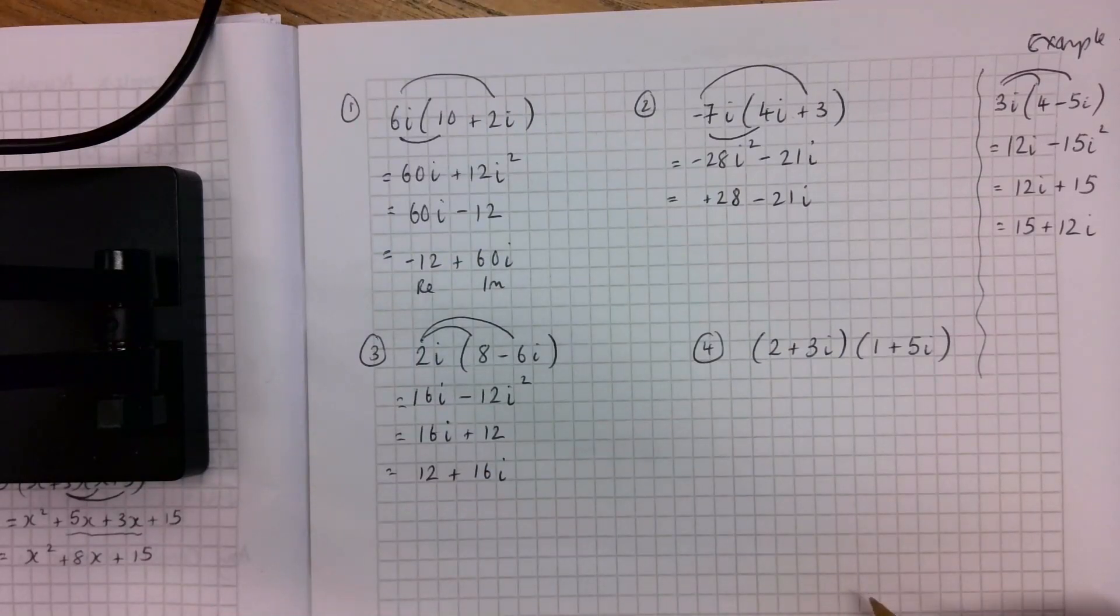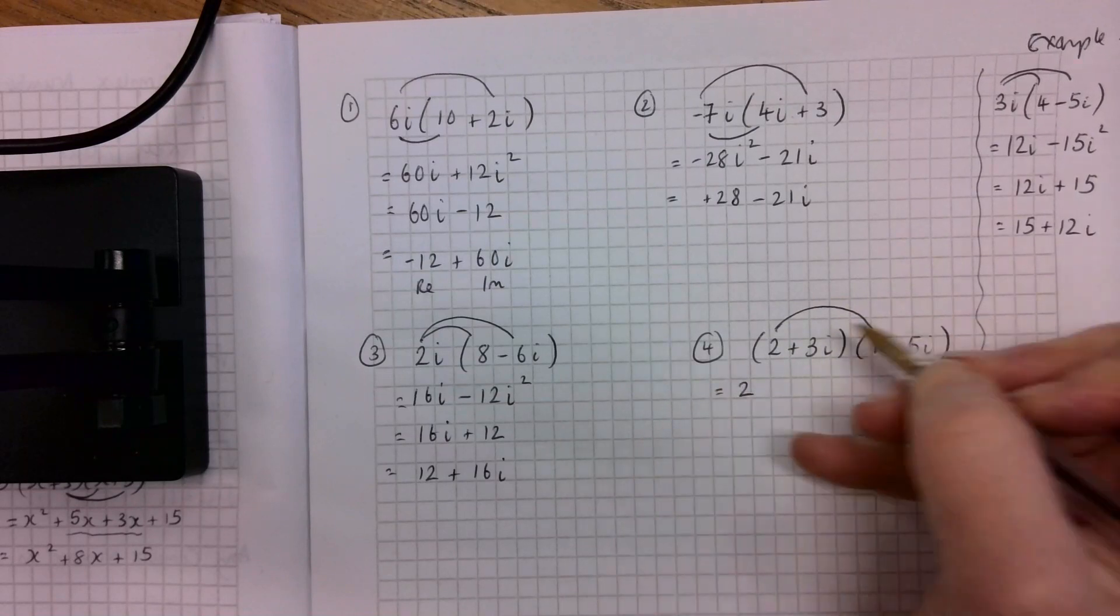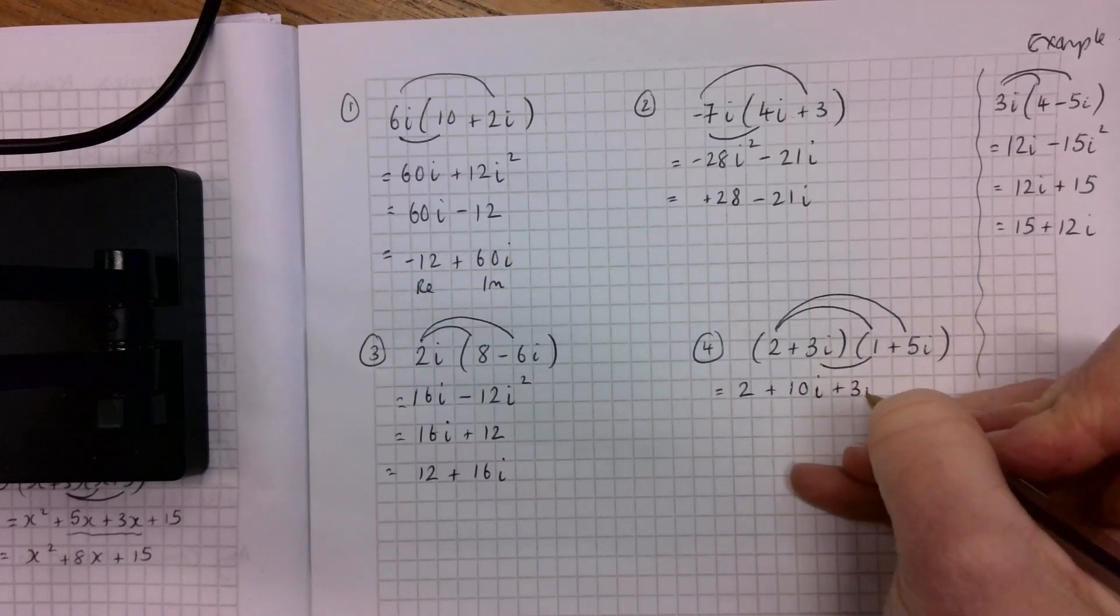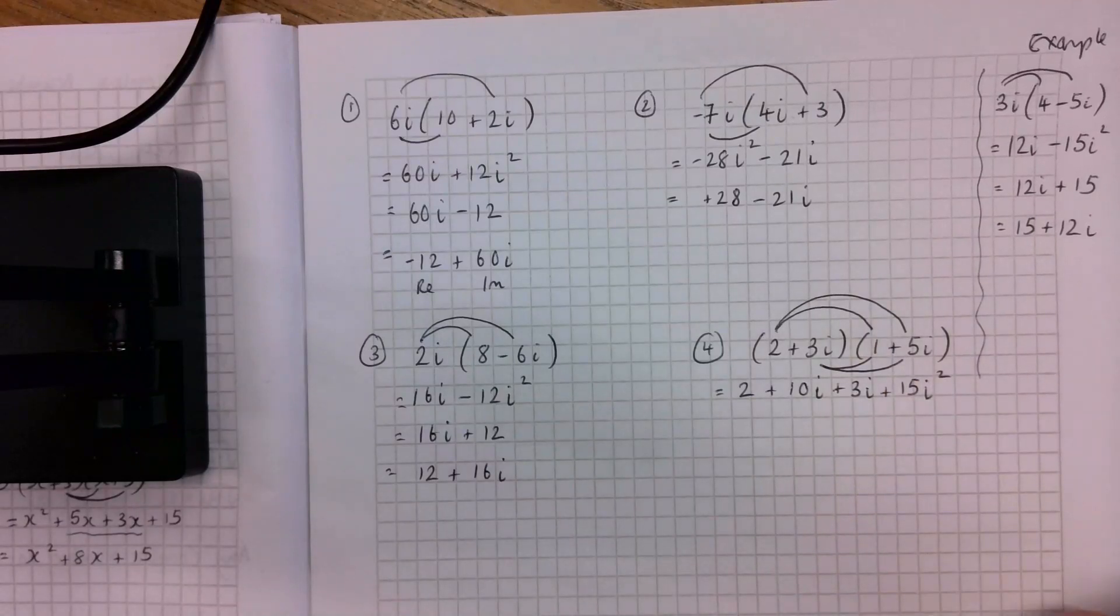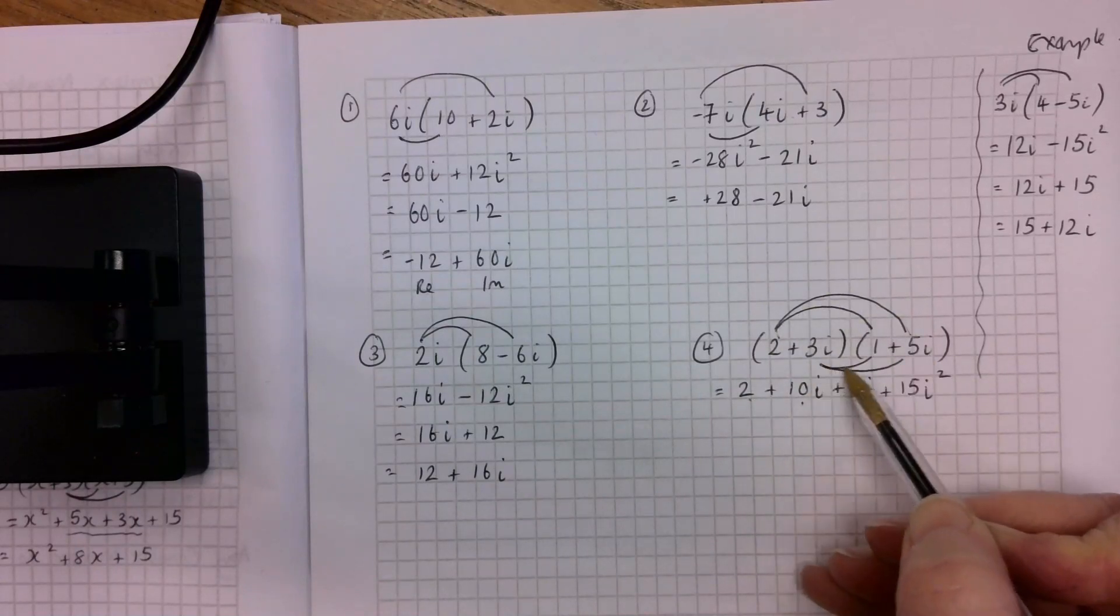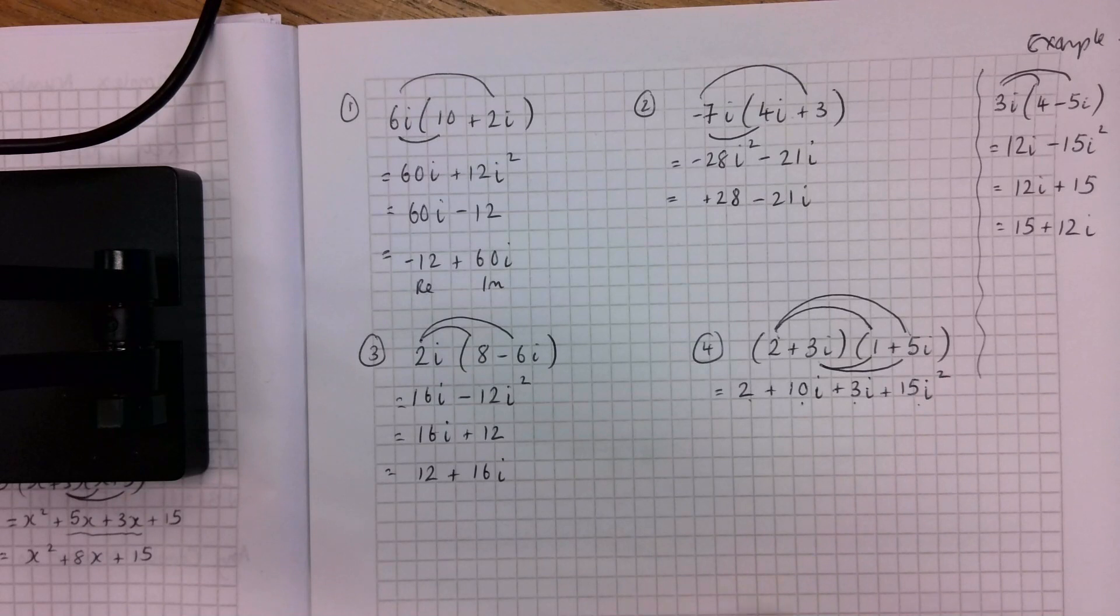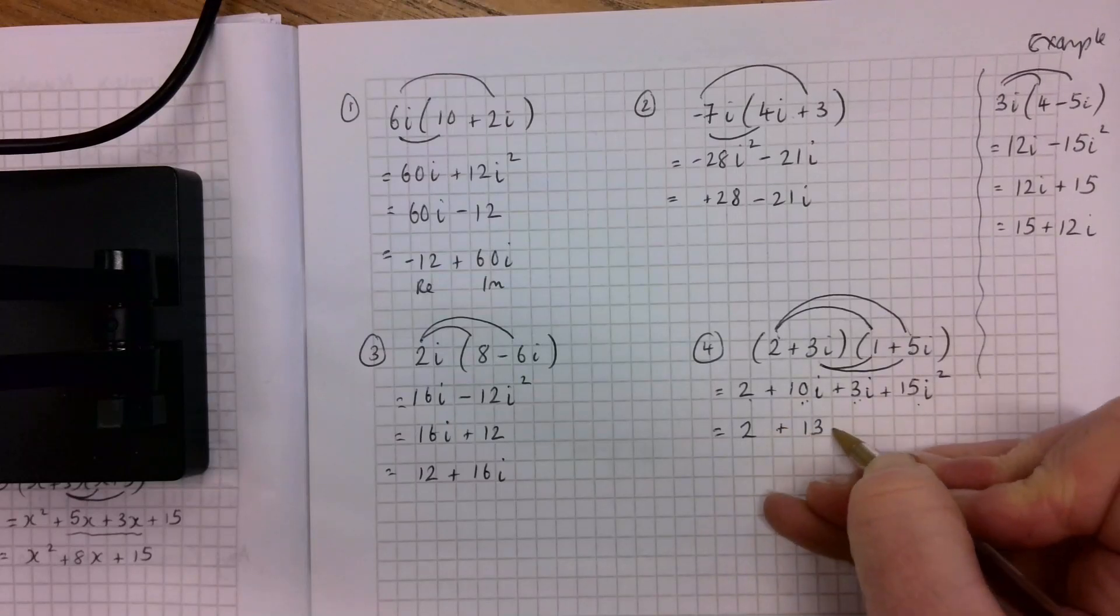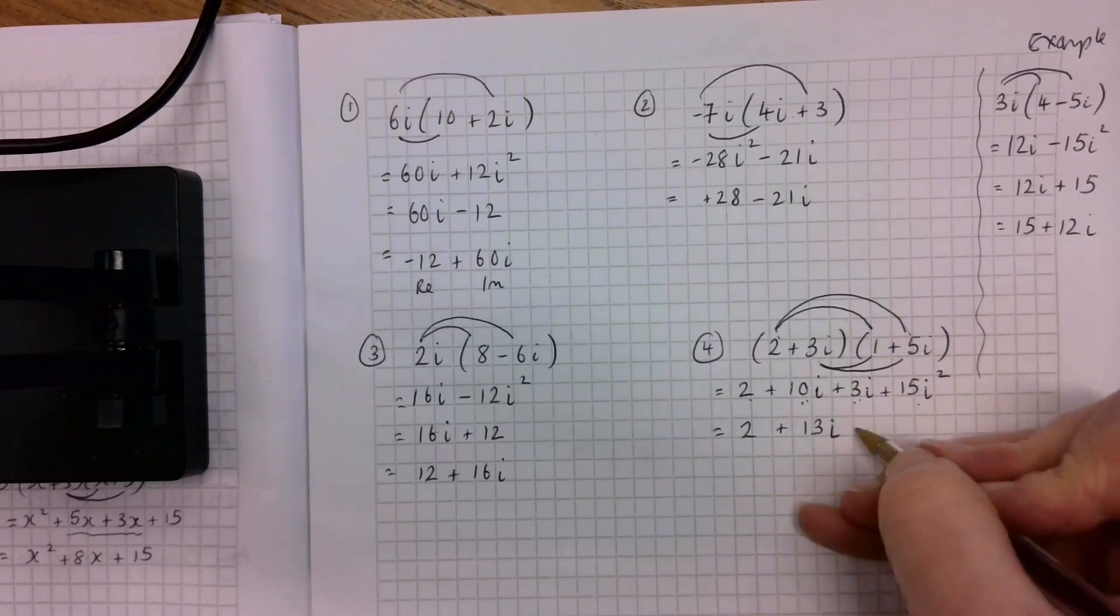And now the fun. Now the harder one. So let's just take this slowly. We have 2 by 1 is 2. 2 by 5i is 10i. 3i by 1 is 3i. And 3i by 5i is 15i squared. So let's go through that again. 2 by 1 is 2. 2 by 5i is 10i. 3i by 1 is 3i. And 3i by 5i is 15i squared. So, so far, so good. Now, that's 2. 10i and 3i is 13i. Because they're both just i. Plus 15i squared. Remember, I can change that. That becomes minus 15.